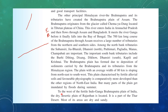To the west of the fertile Indo-Ganga-Brahmaputra plain, the dry desertic plain of Rajasthan is located. It is a part of the Thar Desert, which also extends into Pakistan — so part of it is in India in Rajasthan — and most of its area is dry and sandy.